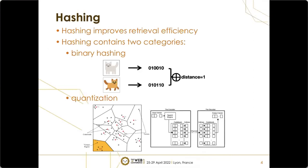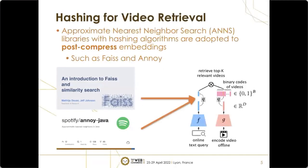Quantization methods divide real data space into disjoint clusters and approximately represent the data points in each cluster as its centroid. Pre-computing inter-centroid distances in a lookup table can largely accelerate distance computation between quantized vectors. As hashing algorithms have been implemented by many approximate nearest neighbor search libraries, such as FAISS and Annoy, practical web search engines widely apply them to post-process embeddings.